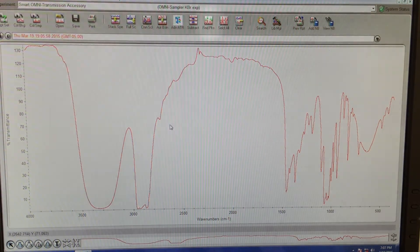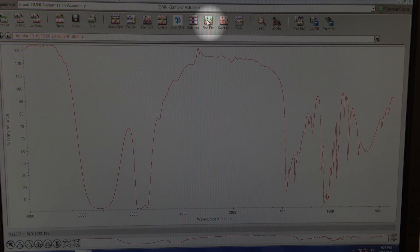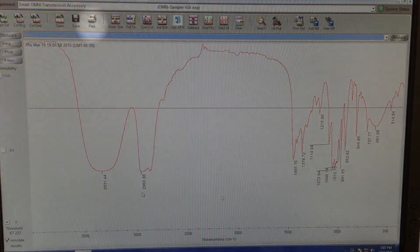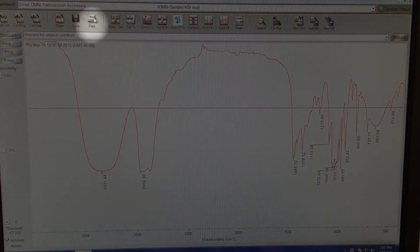Then click Find Peaks. You can adjust the detection threshold manually. Finally, click Print to produce a hard copy.